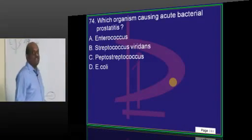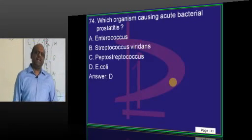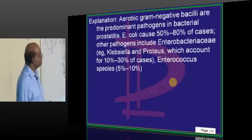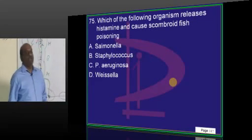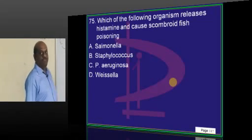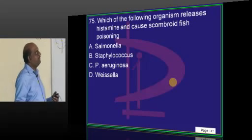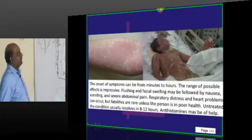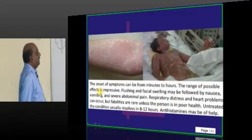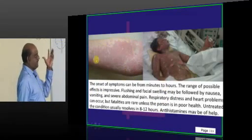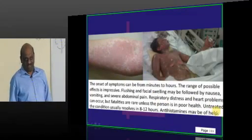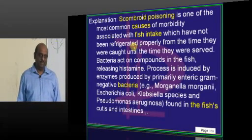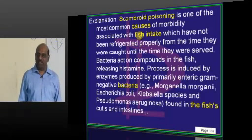Which organism causes bacterial prostatitis? UTI, prostate — anything closer to the rectum and anus will involve anal organisms only: E. coli. Simple to remember. Histamine release in scombroid fish poisoning is because of which organism? Basically after eating scombroid fish there will be a lot of flushing because of extensive histamine release, and the patient goes into respiratory distress. The organism involved is Pseudomonas.